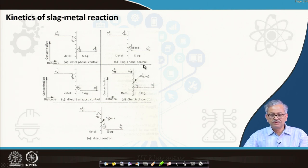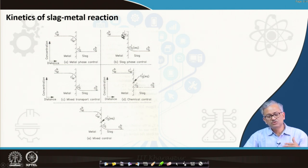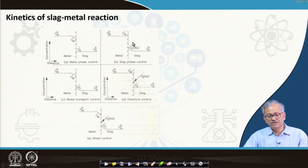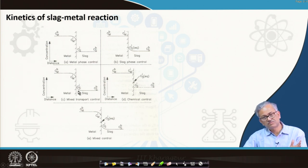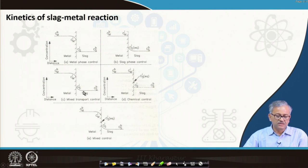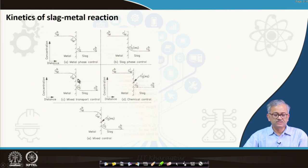For slag phase mass transfer control, there is no concentration gradient in the metal phase because mass transfer on the metal side is assumed to be very fast. Chemical reaction at the interface is fast, giving complete partitioning at the interface. Resistance lies only on the slag phase from interface to slag bulk. In mixed transport control, mass transfer on both the metal side and slag side control the reaction, with comparable resistances.